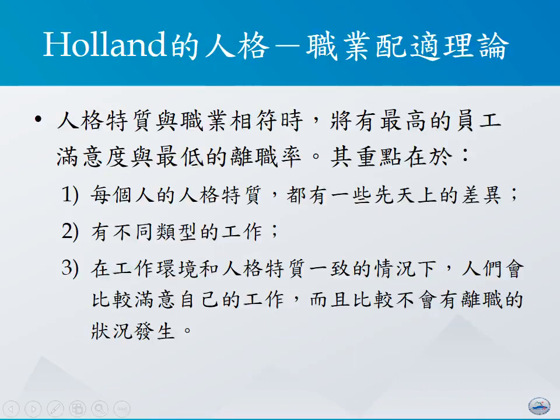刚才所提到的各种不大一样的人格特质，都在告诉我们一件事情：不同人格特质的人，可能会有一些较容易出现的工作特性和行为倾向。因此，有一位叫做Holland的学者发展出来了一个人格职业配适的理论，他希望借此能够帮助我们了解人格特质跟职业的关系。他的论点是，人格特质跟职业相符的时候，将会出现最高的员工满意度跟最低的离职率。